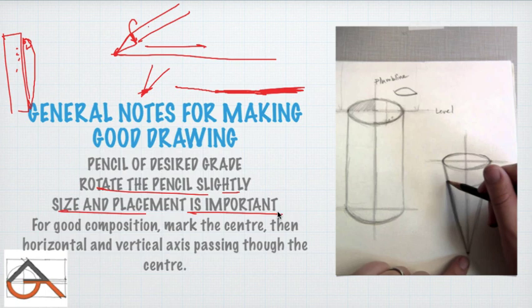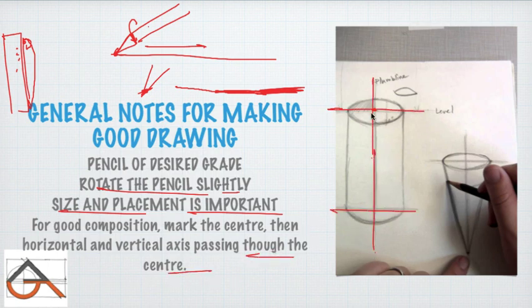For good compositions, first mark the center, then draw horizontal and vertical axes through the center. From this you can plan the full drawing and bring it into scale. Many people ask: what is the difference between proportion and scale? When you compare two objects — for example one is 2 cm and another is 4 cm — that relationship (1:2) involves scale. Scale is comparing object A to object B.